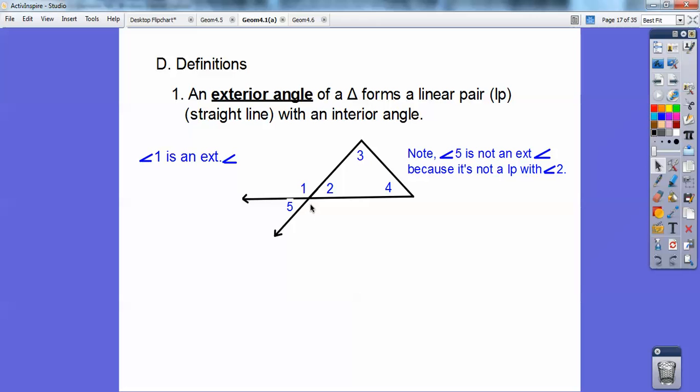This angle would be, if I called that, say, angle 6, because it makes a straight line with angle 2. But this one's not, because it doesn't make a straight line. So those are exterior angles.